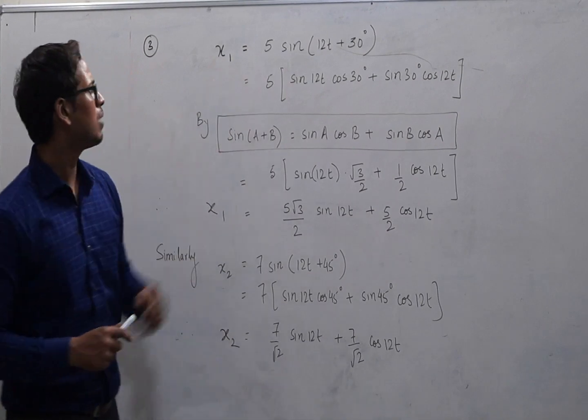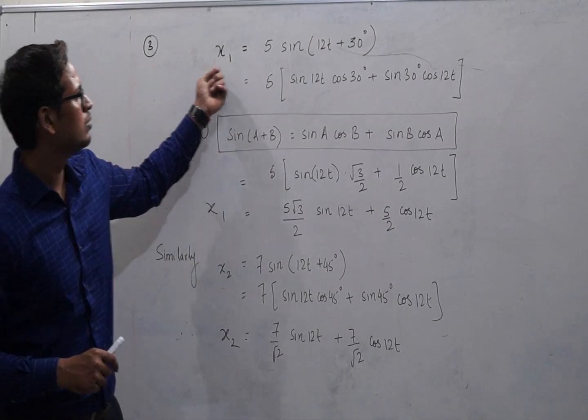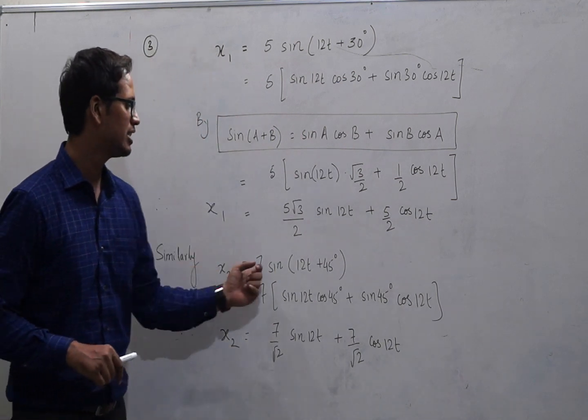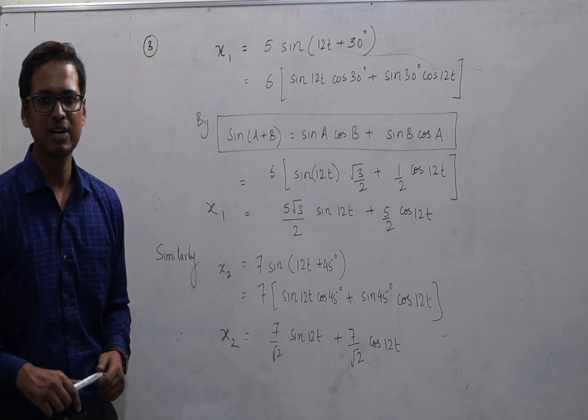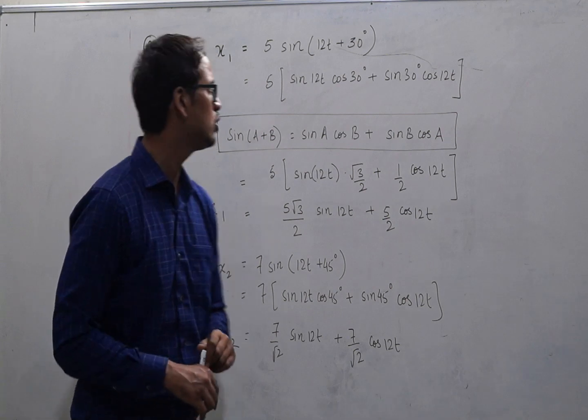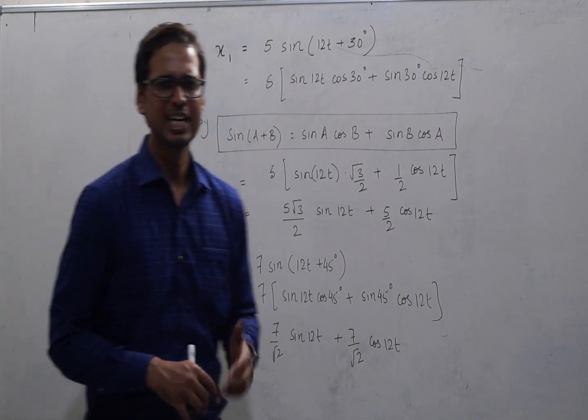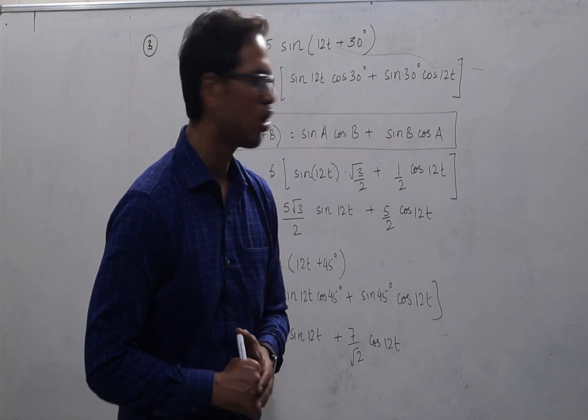So the displacement of particle 1, which is given as x1, is 5 sine of 12t plus 30 degrees, and x2, which is 7 sine of 12t plus 45 degrees. Now the question says, we need to express this in terms of alpha sine of 12t plus beta cos 12t.